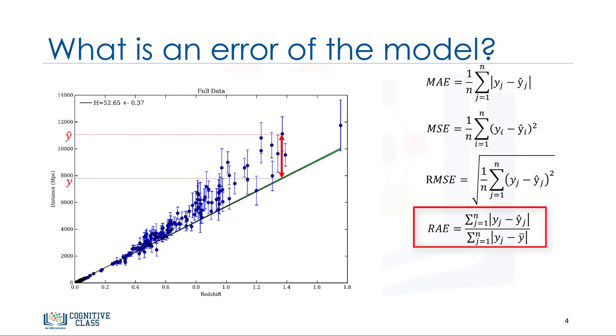Relative absolute error, also known as residual sum of square, where y bar is a mean value of y, takes the total absolute error and normalizes it by dividing by the total absolute error of the simple predictor.